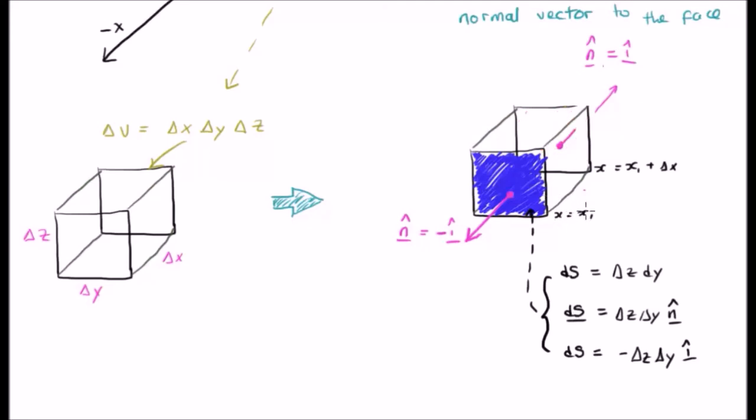So, at the face which is at X equals X sub 1, we have the normal negative i hat. And at the face X equals X sub 1 plus delta X, we have a positive i hat normal vector to the face.